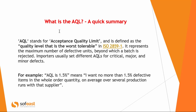AQL — what is it? Acceptance quality limit. It is a limit. The standard says it is the quality level that is the worst tolerable — in other words, the maximum proportion of defective units. If there's one more defect, the batch is rejected. If you're just up to the maximum, up to the limit, it's still accepted.